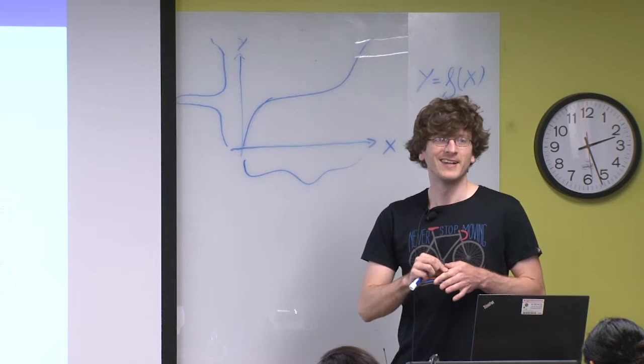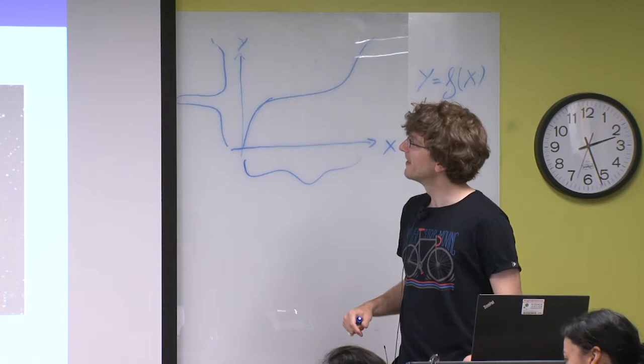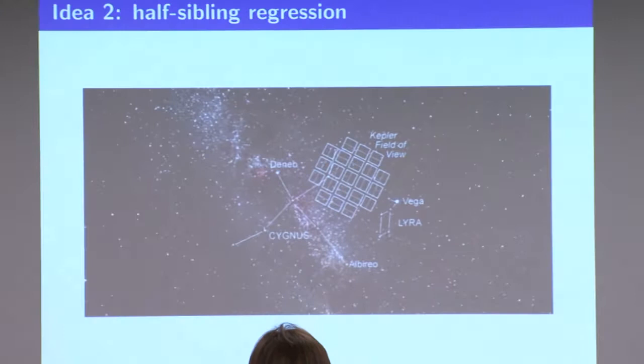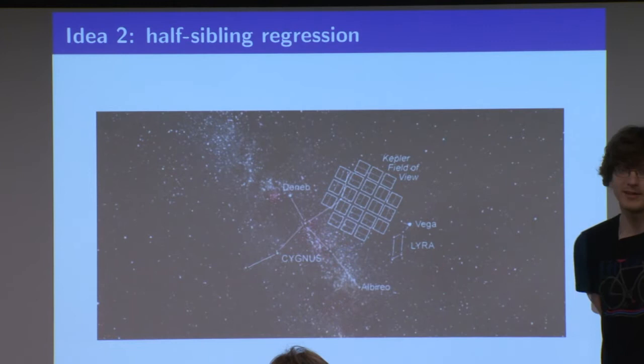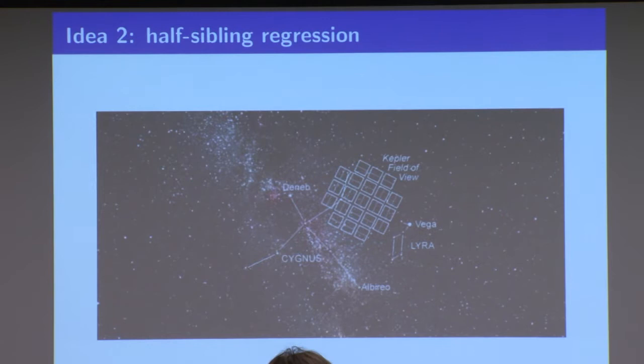The next application is about exoplanet search — this is called half-sibling regression. I'm not claiming we are the first ones to use such a method; there are probably other people who have done this before. It's about phrasing it in a causal context.